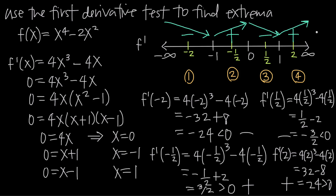Drawing arrows on the number line makes the function's behavior visual: decreasing, then increasing, then decreasing, then increasing. Because the function changes direction at x = -1, 0, and 1, we can confirm all three are critical points. At x = -1 the function changes from decreasing to increasing; at x = 0 from increasing to decreasing; at x = 1 from decreasing to increasing.